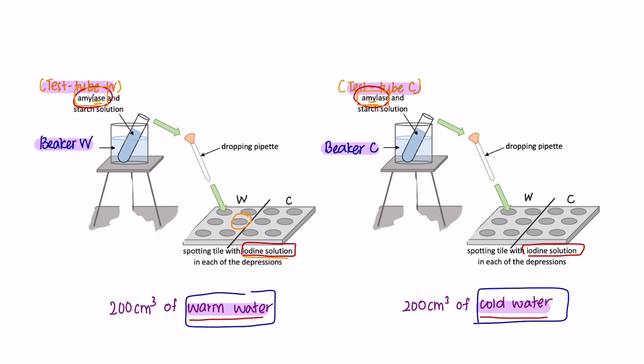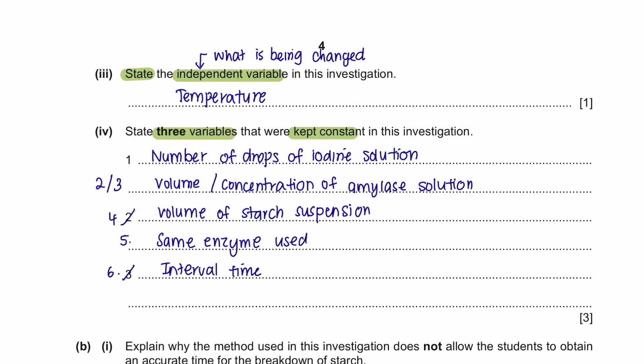We also tested it with the same enzyme of amylase in both experiments. The volume of starch solution was the same. And all these droplets were inserted at the same interval, which is 30 seconds. You can choose any 3 of these to obtain a complete full mark.